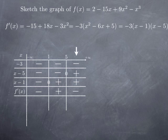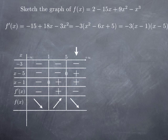The interpretation, in terms of increase and decrease, is that the function is decreasing on the interval negative infinity to 1, and also on the interval 5 to infinity, and is increasing on the interval from 1 to 5.